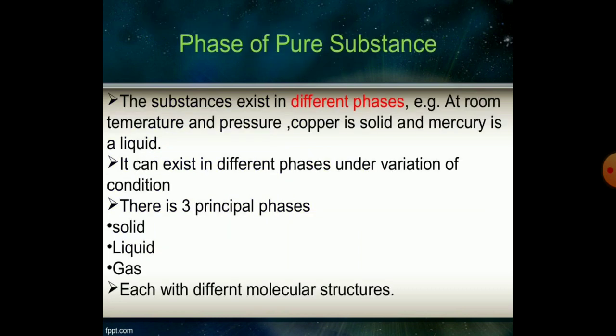The substance exists in different phases. For example, at room temperature and pressure, copper is solid and mercury is liquid. So it can exist in different phases like solid, gas, or liquid. There are three principal phases of any kind of substance: solid, liquid, and gas.